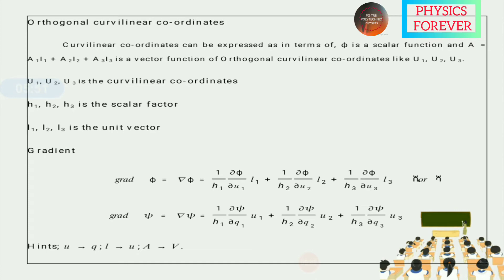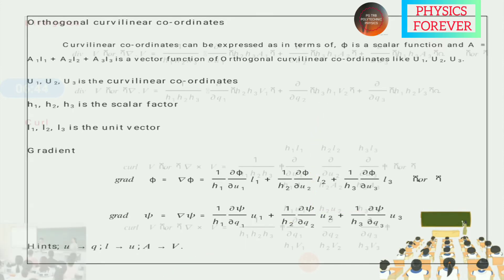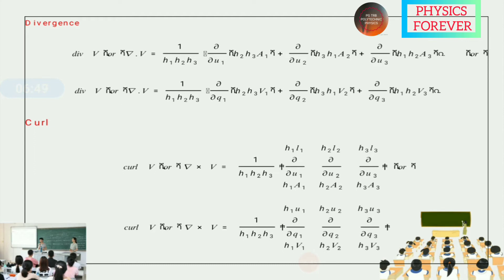From this general expression for gradient in orthogonal curvilinear coordinates, we convert u to q and l to q and A to v. The gradient becomes: del(phi) = (1/h1)(∂psi/∂q1)·u1 + (1/h2)(∂psi/∂q2)·u2 + (1/h3)(∂psi/∂q3)·u3. Similarly, we write general expressions for divergence and curl and convert them to orthogonal curvilinear coordinates.